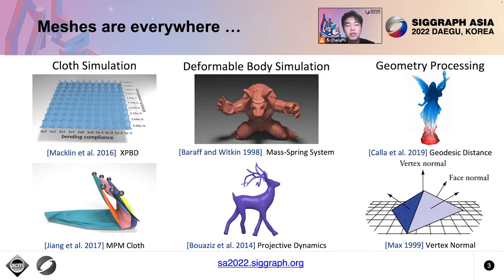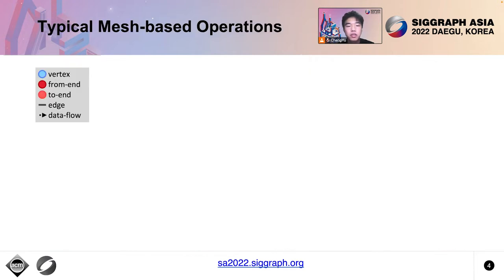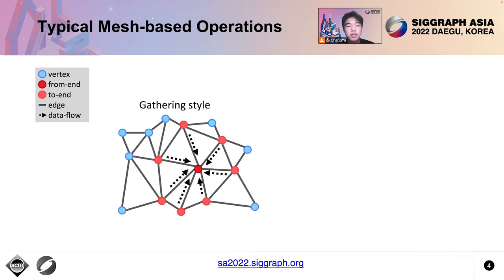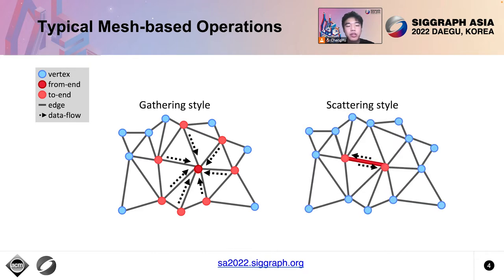Meshes are widely used as discretization forms in many physically-based simulation applications like cloth simulation, deformable body simulation, and geometry processing applications, since meshes provide conformal spatial discretization. Here we demonstrate two typical styles of local mesh-based operations which can load and store attributes from arbitrary elements and their neighbors. The gathering style operations read attributes from the neighbors of an element and store attributes to the element itself. The scattering style operations, on the contrary, read attributes from an element and write attributes to its neighbors.